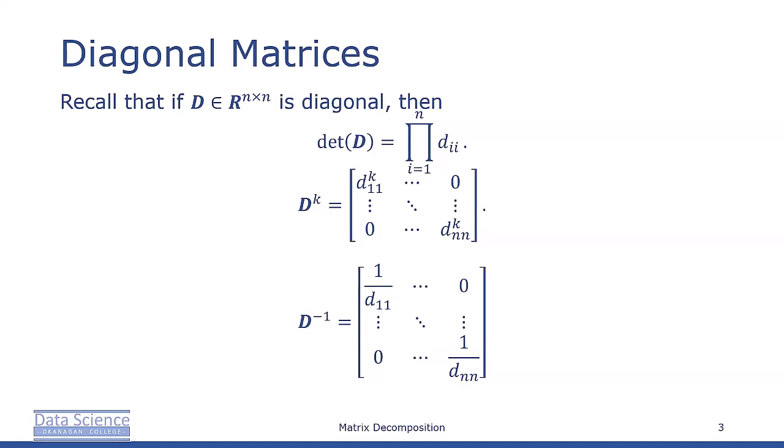In particular, the determinant of a diagonal matrix is the product of all the terms on the main diagonal. If we take a diagonal matrix and raise it to a power, rather than having to multiply it by itself k times, we simply raise the components on the main diagonal to the power of k.